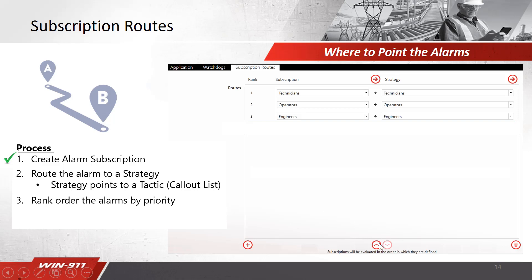You have the ability to move these items up and down to rank-order your subscription filters. Typically you put your highest priority or most critical alarms at the top. In a scenario where your alarm is not caught by a subscription — maybe incorrect case sensitivity, since these items are case sensitive, or maybe you mistyped something or didn't filter on the correct criteria — the alarm would filter through all of these and not go anywhere.